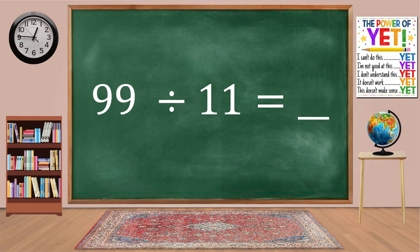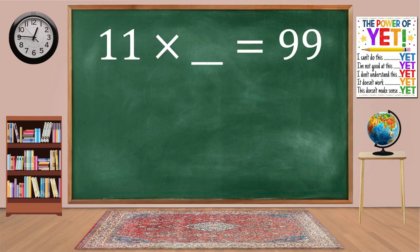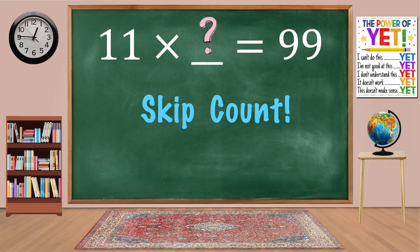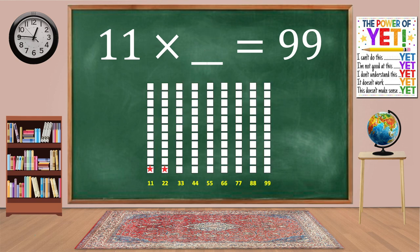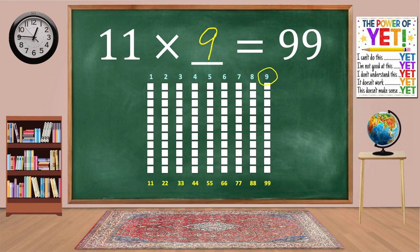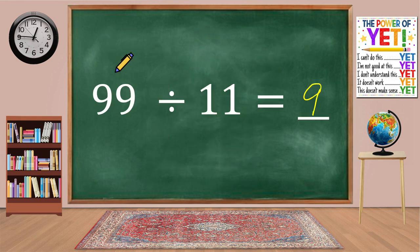99 divided by 11 equals blank. Our related fact is 11 times what equals 99? Skip count: 11, 22, 33, 44, 55, 66, 77, 88, 99. We have nine columns. 11 times 9 equals 99. 99 divided by 11 equals 9.